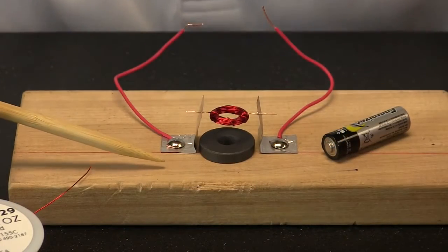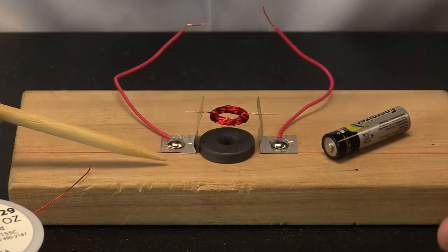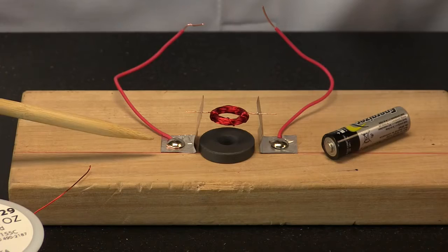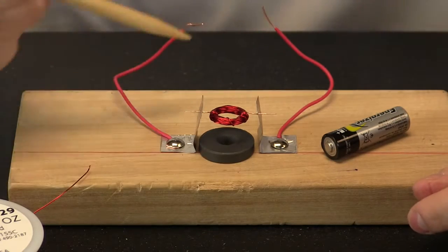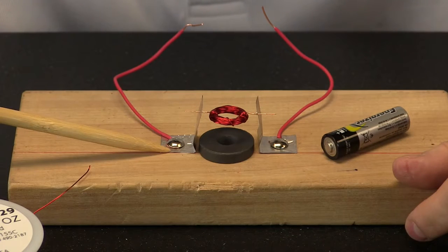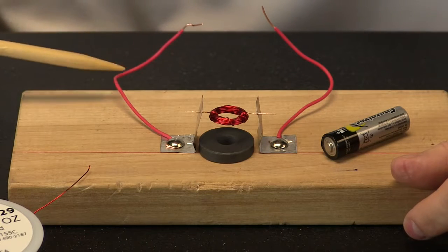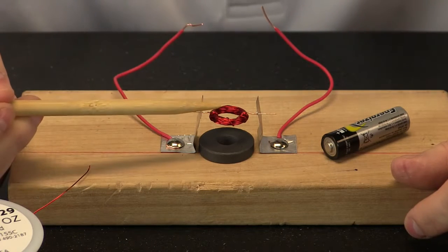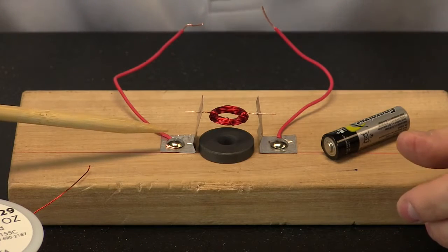So our setup for this electric motor is pretty simple. Everything we use needs to carry electricity, and that electricity must travel in a circle, scientists call a circuit. So we have a metal tab, we have a metal push pin, we have this metal wire and we have this coil of copper. Everything is metal and all of those carry electricity.